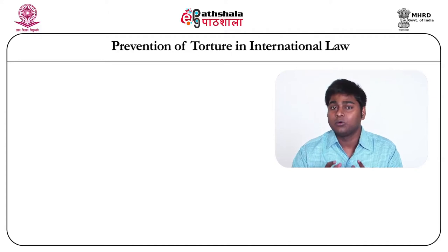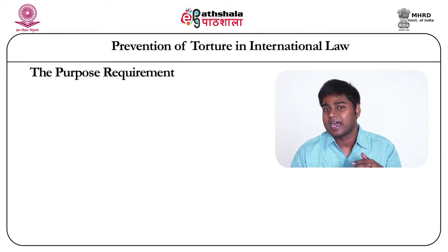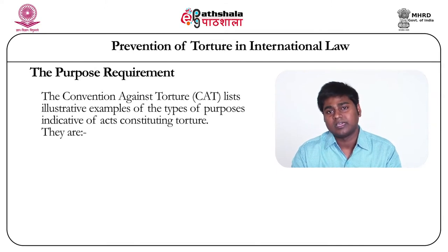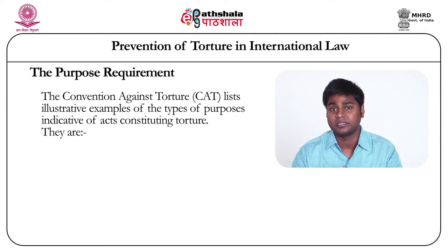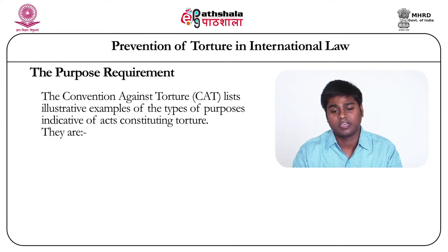We now come to the third and most important element: the purpose requirement. The Convention Against Torture has given four different purposes, but all four are merely illustrative in nature. Different purposes may be interpreted and brought in to define an act as torture. The four purposes are: obtaining information or confession, punishing for a committed or suspected act, intimidating or coercing, and for any reason based on discrimination of any kind.